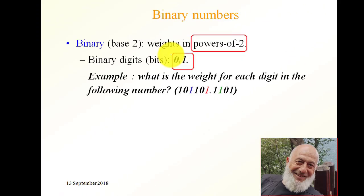What is the weight for each digit in a binary number? The weight for this digit here is 8, which is 2 to the power 3. The weight for this digit is 1, which is 2 to the power 0. The weight here is 2 to the power minus 2, which is 0.25.